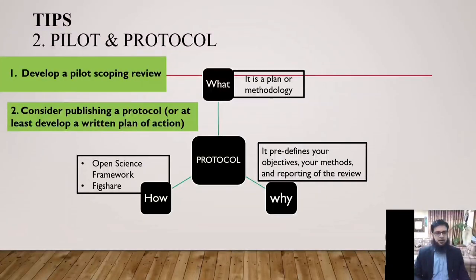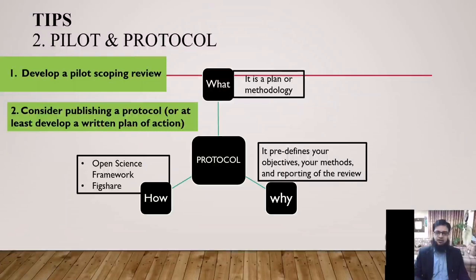According to the JBI Manual for Evidence Synthesis, chapter 11.2 on development of a scoping review protocol, a scoping review protocol is important as it pre-defines the objectives, methods, and reporting of the review, and allows for transparency of the process. The protocol should detail the criteria the reviewers intend to use to include and exclude sources of evidence, and identify what data is relevant and how it will be extracted. The protocol provides the plan for the scoping review and is important in limiting reporting bias. Any deviations from the protocol should be clearly highlighted and explained.